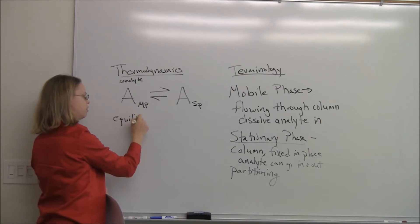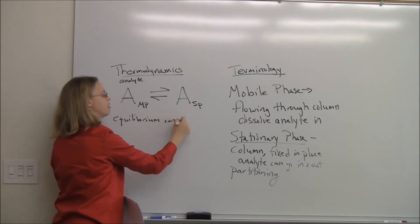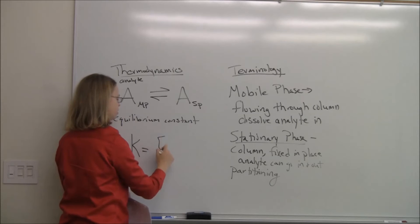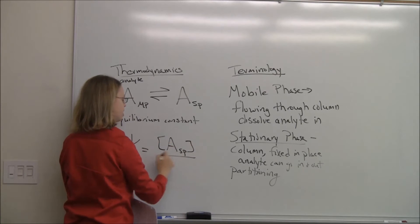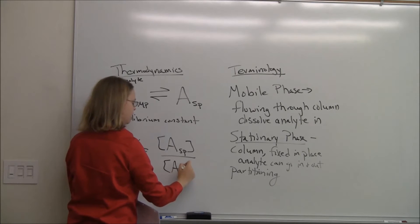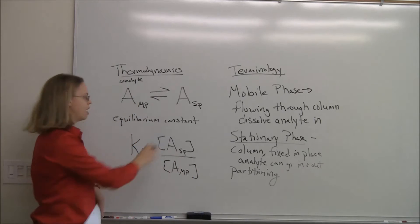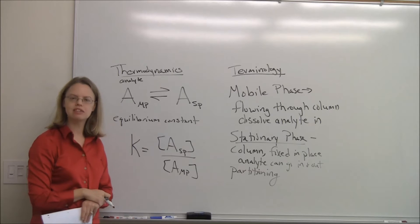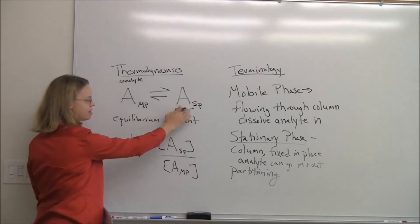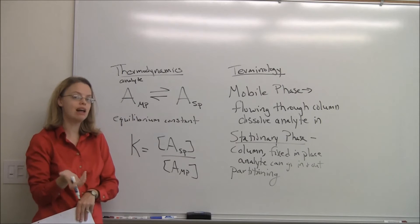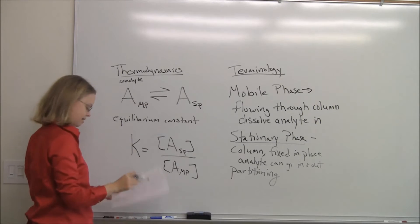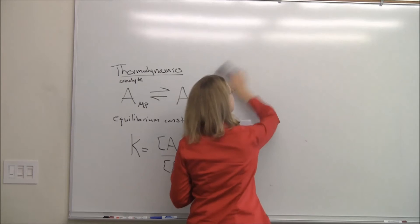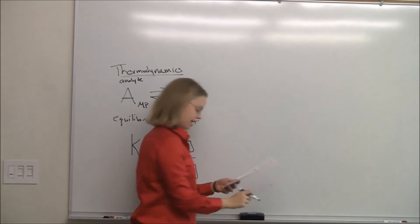You could write an equilibrium constant for this equilibrium. We'd say K, the equilibrium constant, would be equal to the concentration of A in the stationary phase divided by the concentration of A in the mobile phase - products over reactants, the same thing as any other equilibrium constant. The question we have in separations is: which phase does it want to be in? Does it want to be in the stationary phase or the mobile phase? That tells us how long our analyte is going to stay on our column and how long it's going to take to come out. The answer to that is actually a thermodynamic answer.